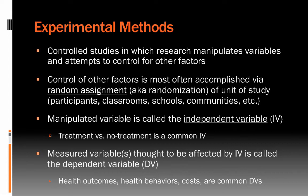This is most often accomplished via random assignment, or randomization, of the unit of study. Most often — certainly in the types of studies done in the Department of Psychology at OSU — this involves randomization of people. Individuals in a study may be randomized to different conditions, to different experiences within the study, and then we look at the effect on the dependent variables, giving us inference about the aspect on which randomization happened.